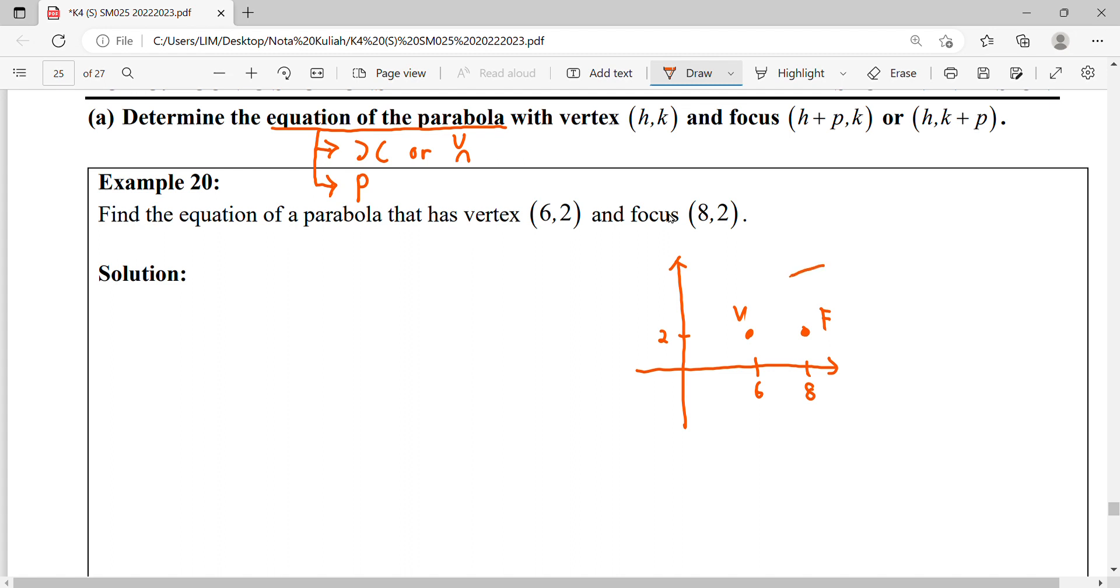This means that this parabola will open to the right. So for opening to the right, the formula will involve Y squared. It will be (Y minus K) squared equals 4P(X minus H). So we've determined the orientation of our parabola with the suitable formula.